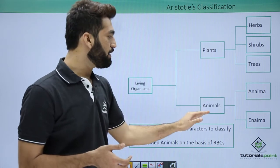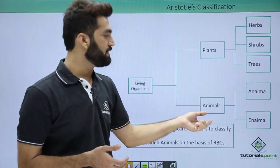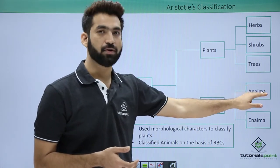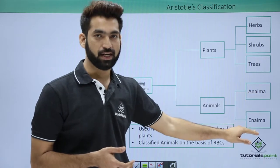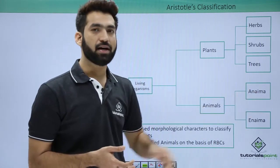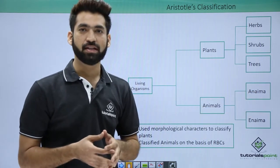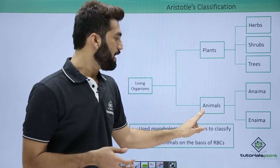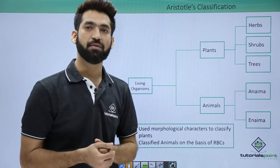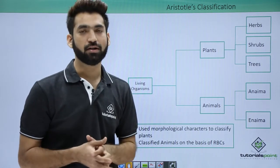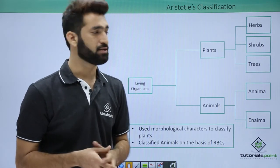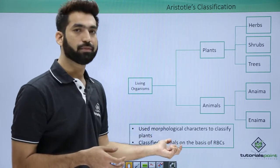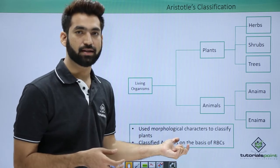On the basis of presence or absence of red blood cells, Aristotle classified animals into anaima and enaima. Anaima are the group of animals which don't have red blood cells, and enaima is the group of animals which have red blood cells. So this classification was basically based on morphological characters.